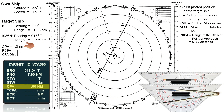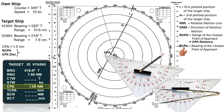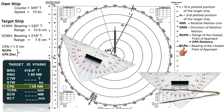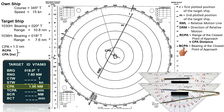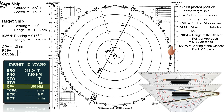To determine the bearing of the closest point of approach, or BCPA, find the direction of the line drawn perpendicular to the RML. This direction always starts from own ship's position and points toward CPA. In this case, the BCPA is 295 degrees.